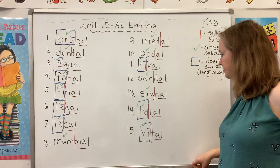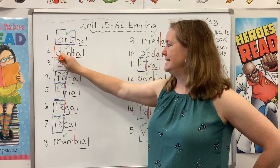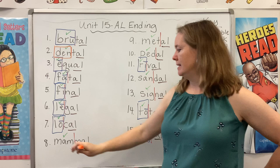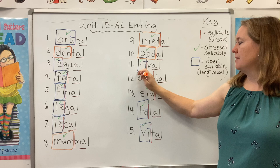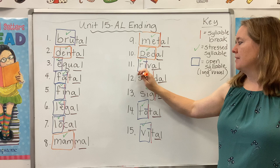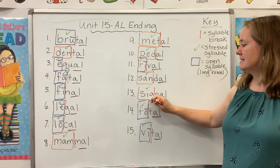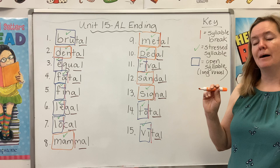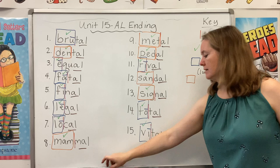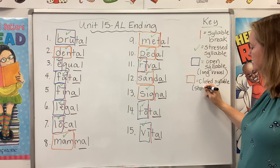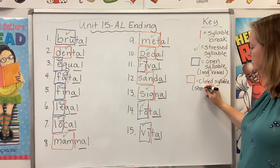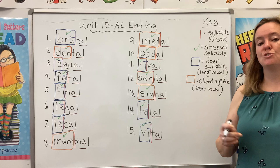Choose another color and now let's find our closed syllables. The D-E-N in dental — there's our short E. The M-A-M in mammal — there's our short A. The M-E-T in metal. The P-E-D in pedal. The S-A-N in sandal. And the S-I-G in signal. All of these words have a closed syllable — that vowel is tucked in between consonants. So orange box equals closed syllable, which means all of those syllables will contain a short vowel.